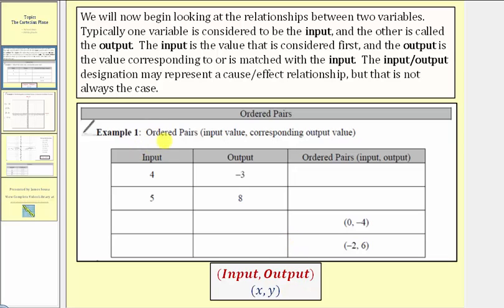Example one: we have to complete the table. Here we have an input of four and an output of negative three and are asked to write the ordered pair. The input is first, comma the output is second, organized in a set of parentheses: four comma negative three. Next, the input is five and the output is eight, so we have five comma eight in parentheses.